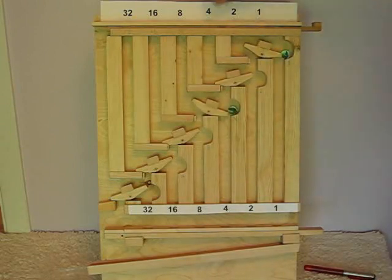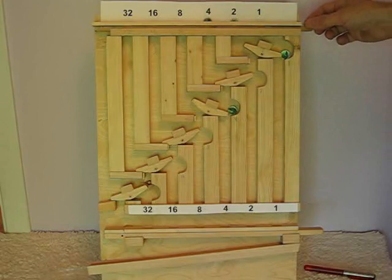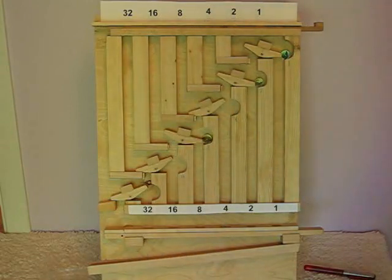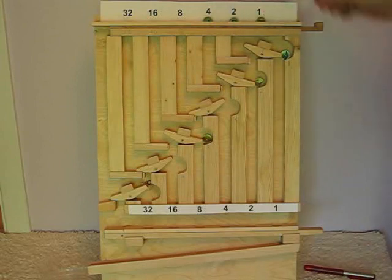Now we add the number six which is a four plus a two in binary. Add the number. And now add a seven which is a four plus a two plus a one in binary. Add.